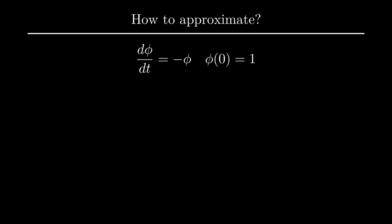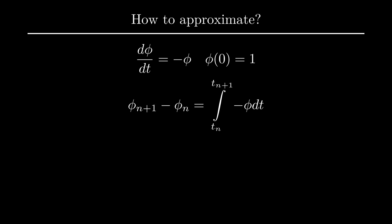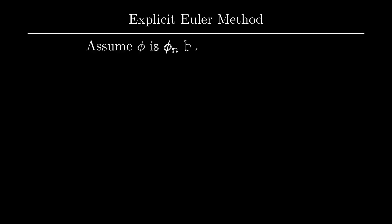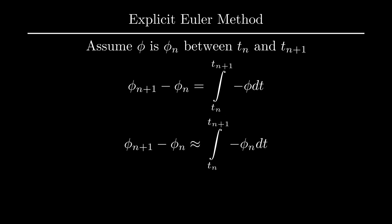Let's go back to the simpler differential equation. Suppose we know what phi is at tn and want to find phi at tn+1. Our first step is to integrate both sides of the equation between tn and tn+1. We can integrate the left-hand side easily, but then we get stuck — we need to know phi as a function of time to integrate the right side. In the explicit Euler method, we assume that for the purposes of the integral, phi equals phi_n between tn and tn+1. Effectively, we're extrapolating phi forward in time from tn to tn+1, so this is often called the forward Euler method.